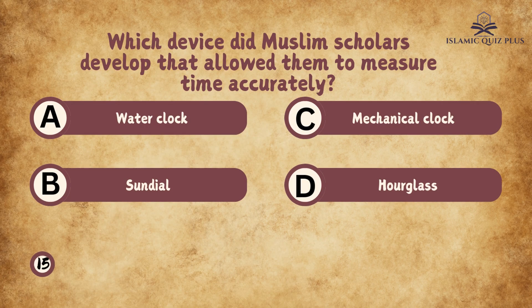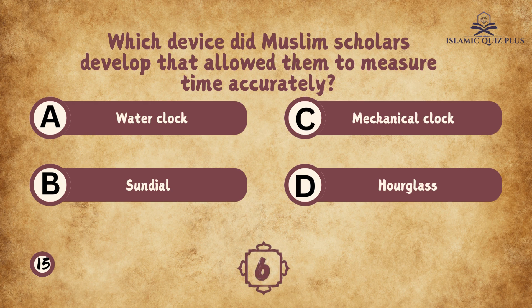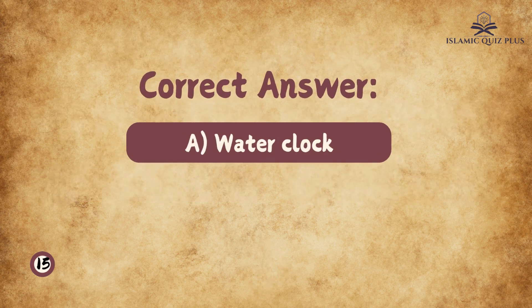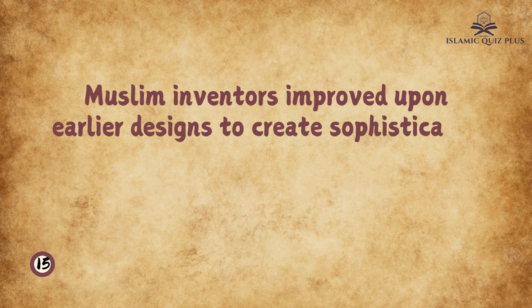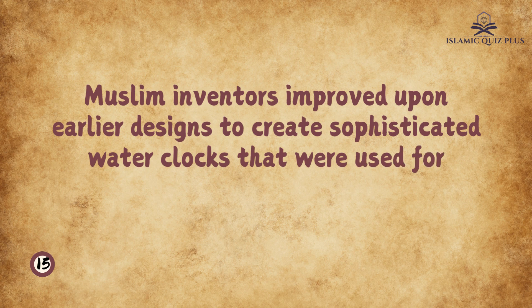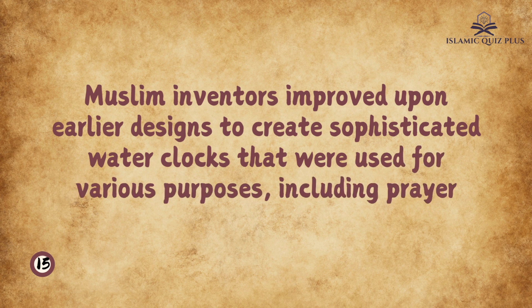Question 15: Which device did Muslim scholars develop that allowed them to measure time accurately? A. Water clock, B. Sundial, C. Mechanical clock, D. Hourglass. The correct answer is A. Water clock. Muslim inventors improved upon earlier designs to create sophisticated water clocks that were used for various purposes, including prayer times.